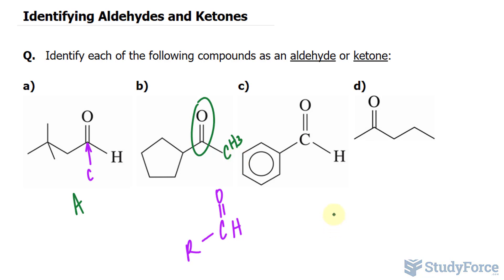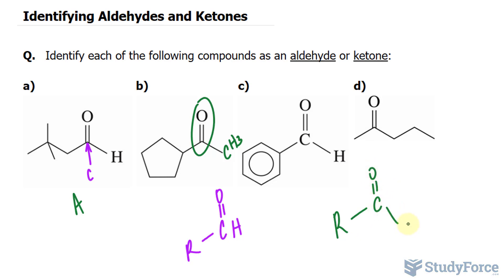Ketones have this structure. The rest of the molecule — and make sure that the rest of the molecule starts with a carbon — carbon double bonded to oxygen, and this carbon is bonded to another carbon.